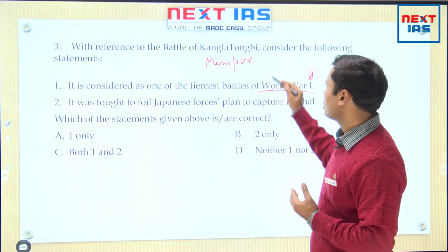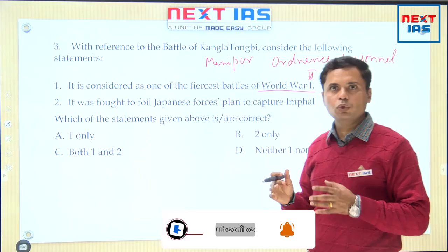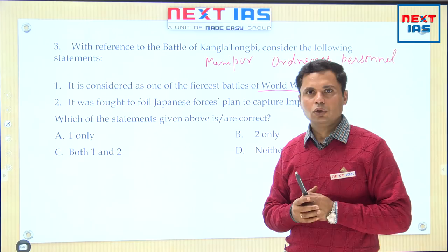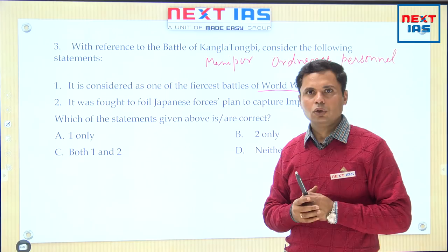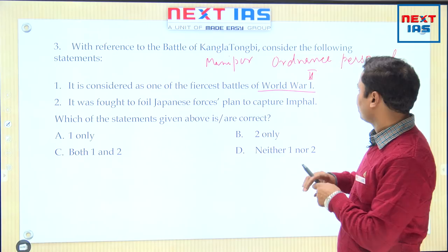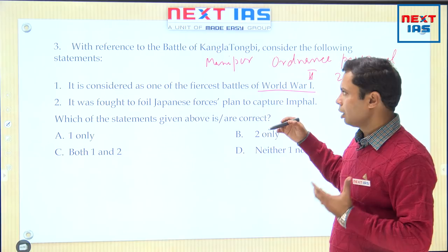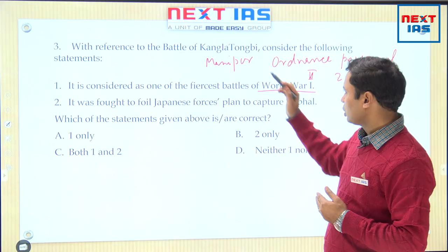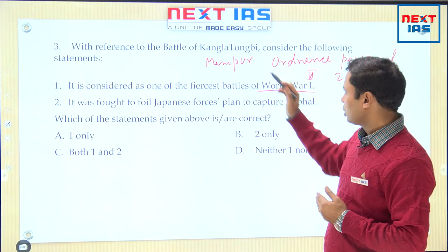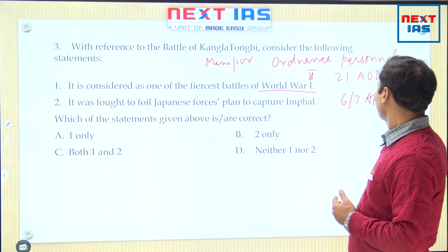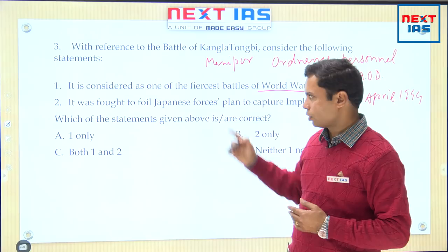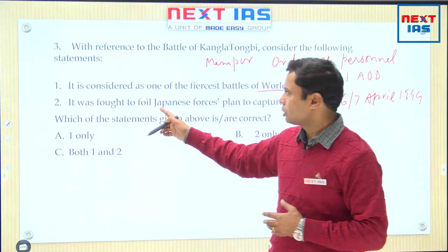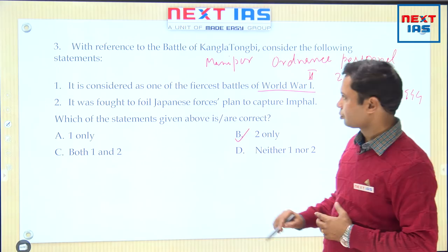It was an attempt by the Japanese to capture Imphal. The city of Imphal was defended by ordnance personnel of the British Indian Army — those who were storekeepers where arms and ammunition were stored. The capital city of Manipur, Imphal, was defended by the 21st AOD (Advanced Ordnance Depot). They fought in such a valiant manner that they were able to defeat the Japanese and Imphal was saved. This battle was fought on the night of 6th–7th April 1944. So it was part of the Second World War, not the First World War, and second option is right, first is wrong — the answer will be B.